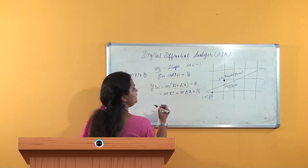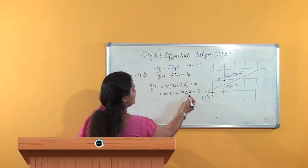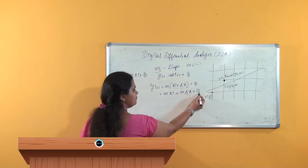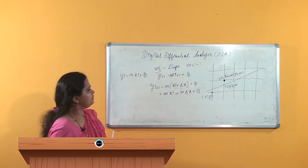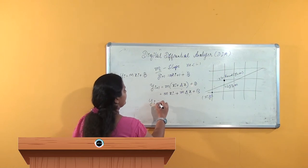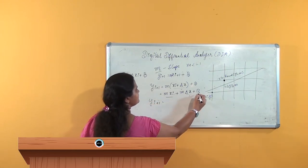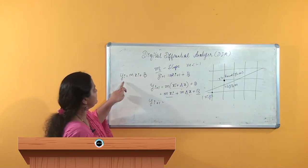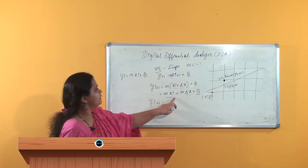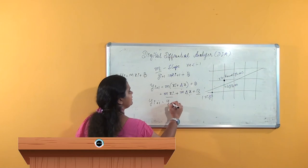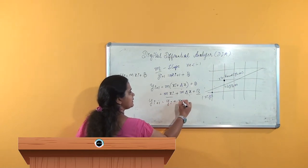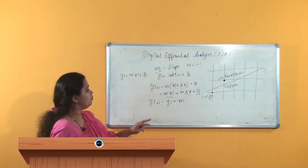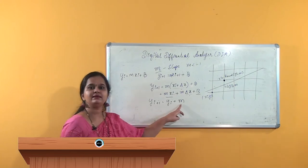With delta x = 1, we get m*x_i + m + b. Therefore, y_i+1 equals m*x_i + b plus m. And m*x_i + b is just y_i. So the change in y — which we are now deriving — is plus m. That is, x changes from one step to another by 1, and y changes by plus m.